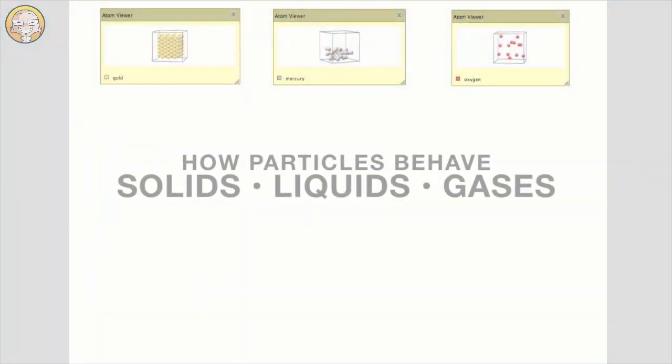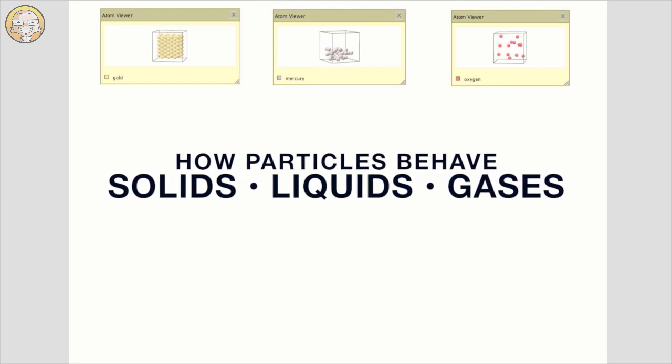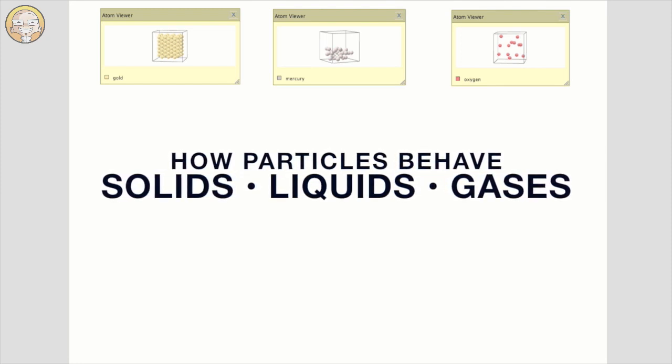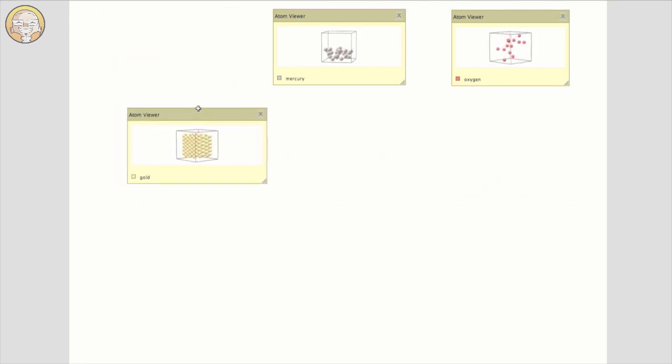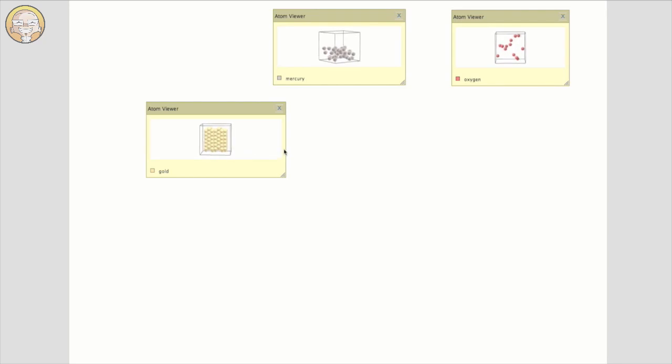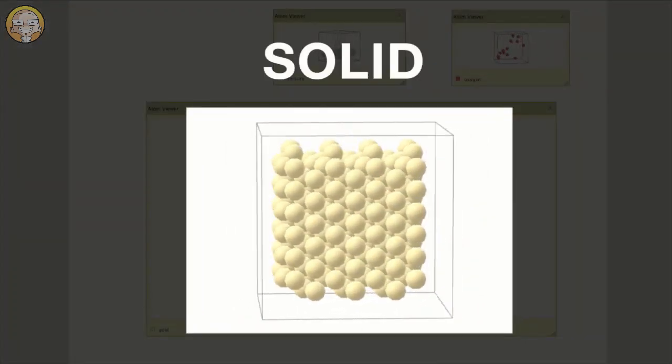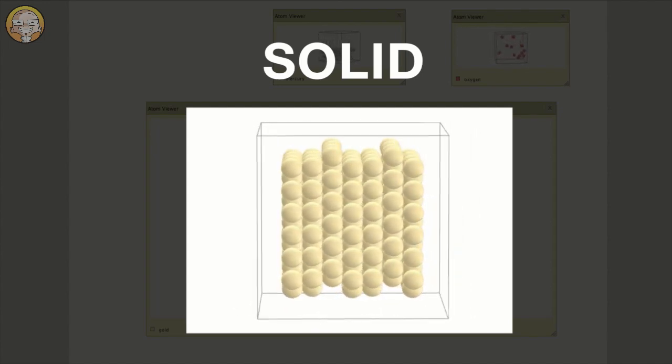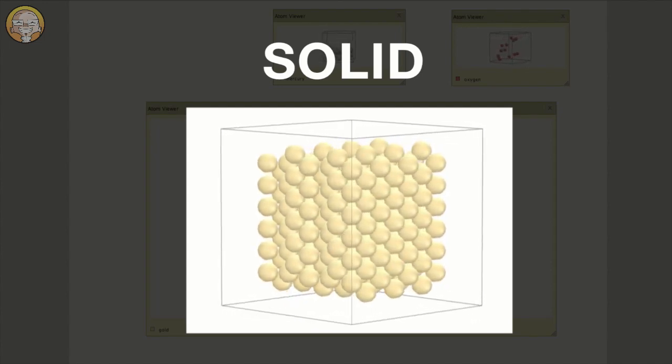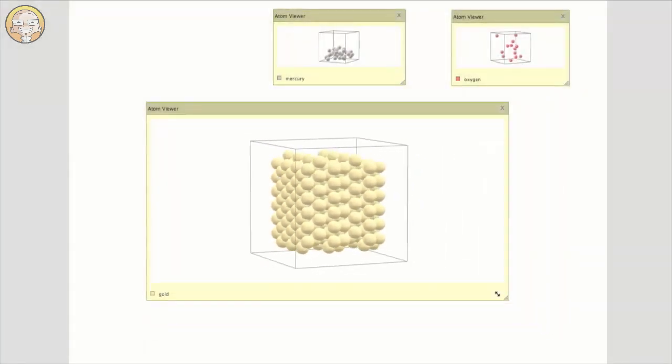But before we explore how a single substance can change state, let's look at how particles behave in solids, liquids, and gases. When we take a close look at the particles of a solid, we see the particles are barely moving and fixed in position. Because the particles do not change position, solids have a definite shape and volume.